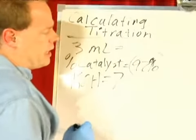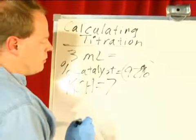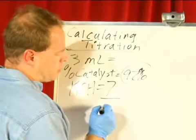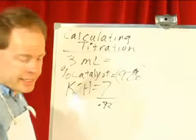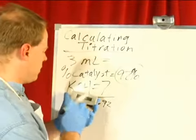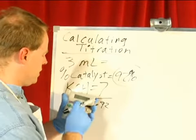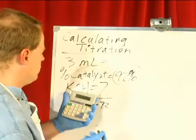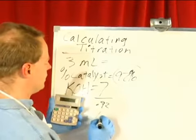I need to account for my purity before I do this, so I'm going to take 7 and divide it by 0.92. I'm going to take a calculator out, and 7 divided by 0.92 equals roughly 7.6.